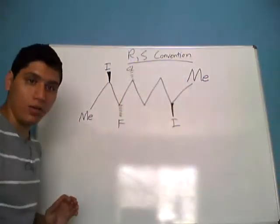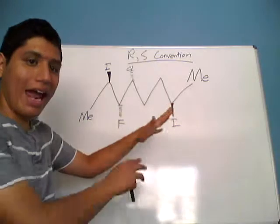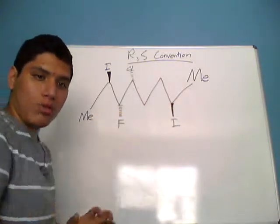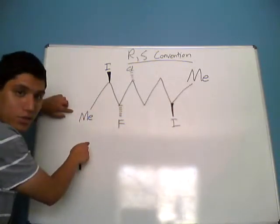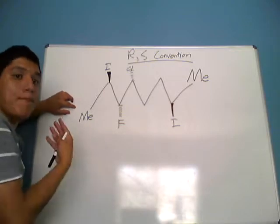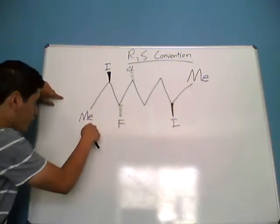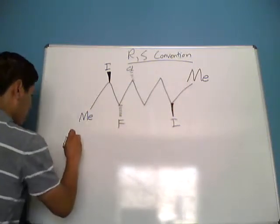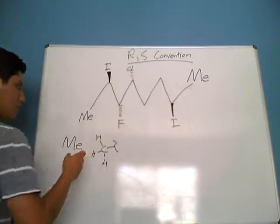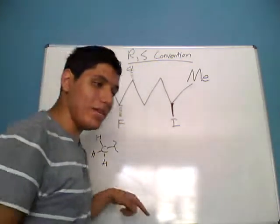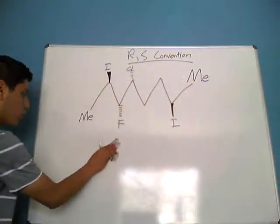So here we have this example. Whenever you're trying to name this, first of all try to identify everything that comes along with it. Remember carbon likes to have four bonds. Whenever you see an ME symbol, if you've never seen it before, it just stands for methyl, and a methyl group is a CH3 group bonded to whatever else. So ME is a carbon bonded to three hydrogens. You use ME as pretty much a notational shorthand.